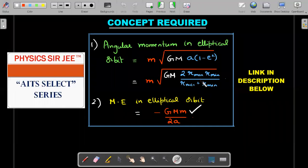First with the concept required in that AITS Select 13 video, I have discussed the formula for angular momentum in elliptical orbit and also the mechanical energy in the elliptical orbit, which we'll be using in this particular problem. So the second one, as you could see, mechanical energy in the elliptical orbit is independent of the eccentricity of the elliptical orbit for a given value of the major axis. Okay, so minus GMM by 2A, a pretty neat expression that you need to remember in order to be acing through this problems.